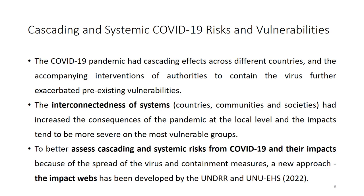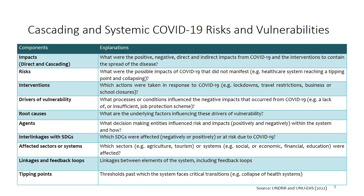A new approach was developed by UNDRR and UNU-EHS in 2022, called the impact web approach, which looks at the spread of the virus as well as the health containment measures imposed by authorities on the whole system. They examined how integrated the system is, and as a result of that, what have been the different systemic risks and effects encountered by countries, communities, and households.